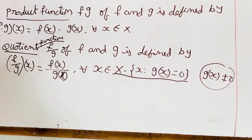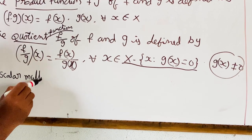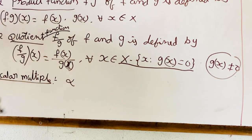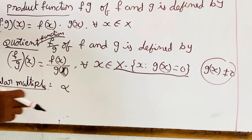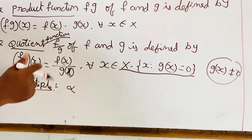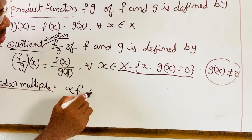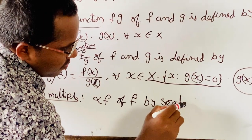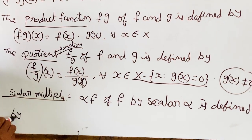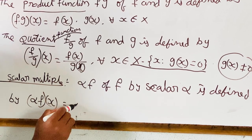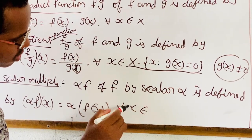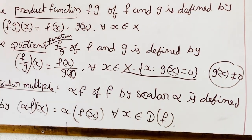Next, scalar multiple: if alpha is a scalar, that is a real number, then the scalar multiple alpha F is defined by alpha F of X is equal to alpha times F of X, for all X belonging to the domain of F.